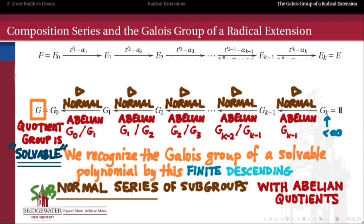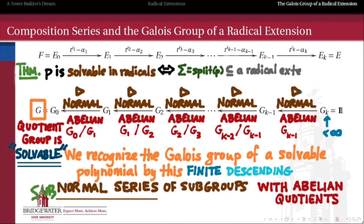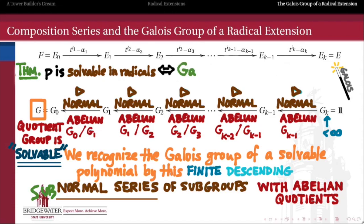We abbreviate all of this by calling G a solvable group. The theorem characterizing the Galois group of a normal extension and the solvability of a polynomial in radicals is: a polynomial is solvable in radicals if and only if its Galois group is a solvable group. After all of our work this semester, we've narrowed it down to this. Now we know how to recognize whether a polynomial is solvable by radicals merely using an abstract algebraic property of its Galois group.